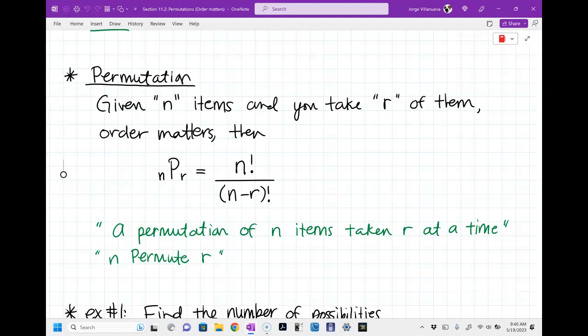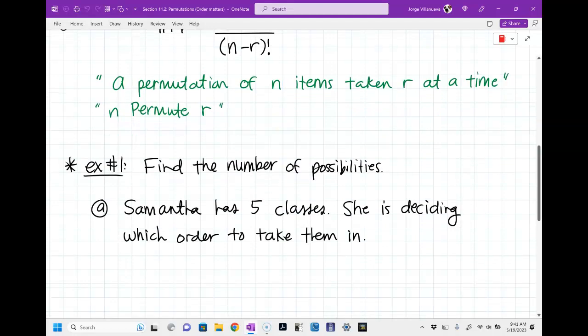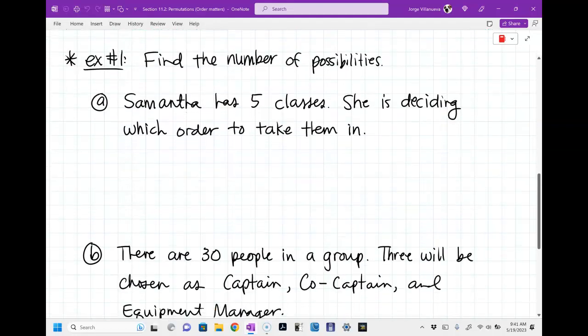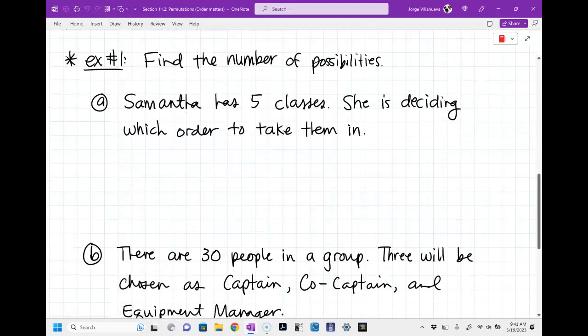But the way you say that thing in black is it's a permutation of N items taken R at a time. The way I say it, I say N permute R. On Monday, there's one that's for combinations, NCR, I say N choose R. That's just the shorthand for saying that big old definition here. So we have, I think, three examples we're going to cover, and then we'll get started with it.